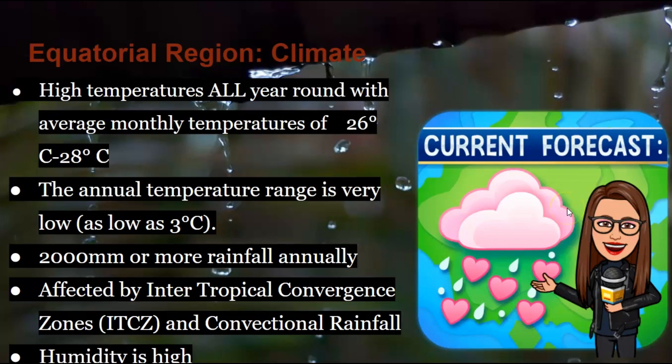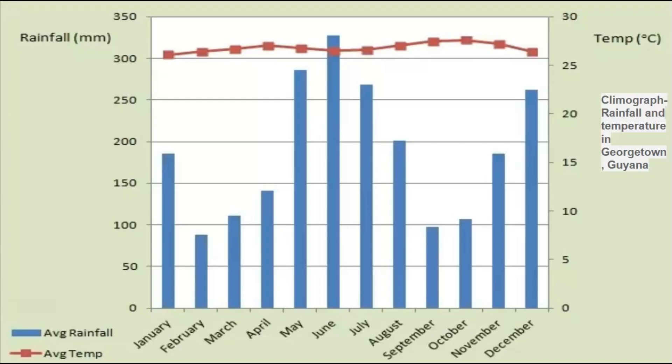The equatorial region experiences the following climatic conditions: the temperature is high all year round with an average monthly temperature of 26 to 28 degrees Celsius, and the annual temperature range is very low — only about 3 degrees Celsius. They experience approximately 2,000 millimeters or more of rainfall annually. Places in the equatorial region are usually affected by intertropical convergence zones and convectional rainfall, and the humidity level is also very high.